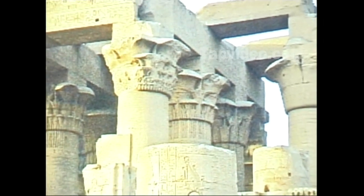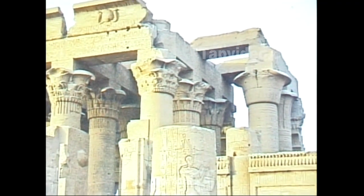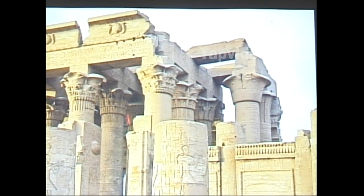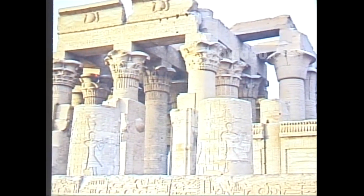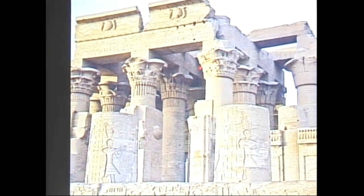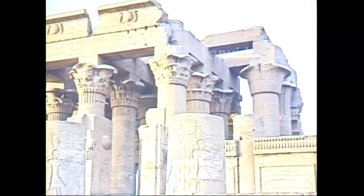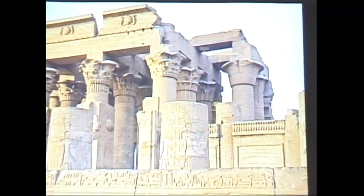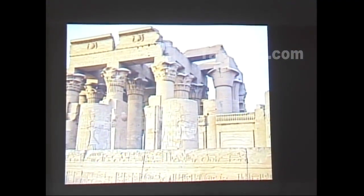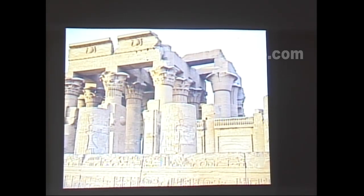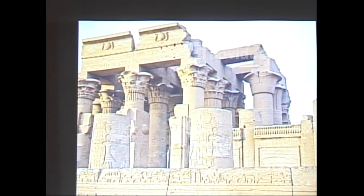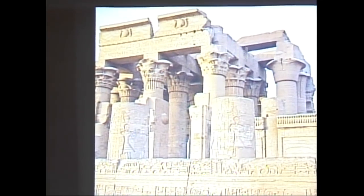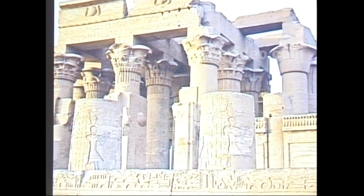We're standing right outside the double temple. On one side of the temple you have Sebek, and on the other side you have Heru, and these two temples have everything identical going all the way back to the holy of holies. It's one of the temples I know of that has a dedication to two gods with their holy of holies built in close proximity.